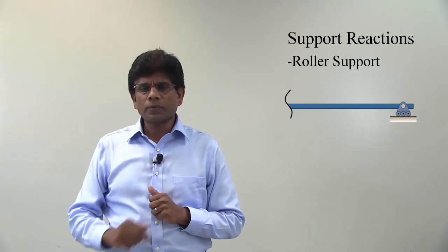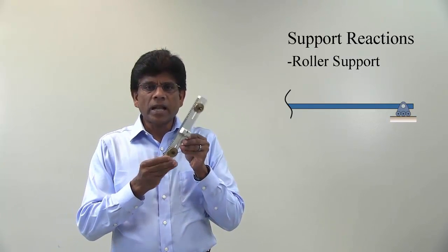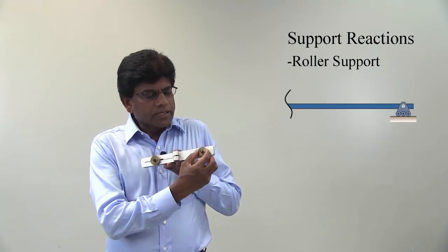Here is an example for roller support. This is a slotted beam. You can see the two slots. And it is used in many experiments.